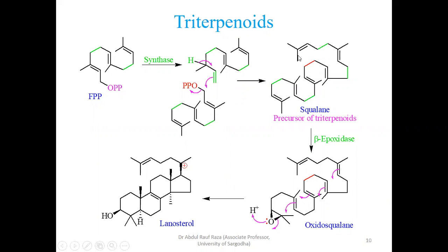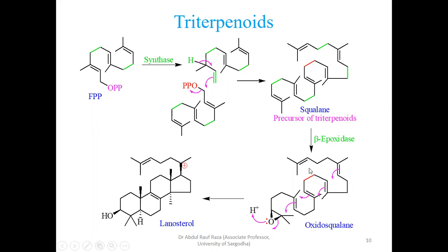Squalene undergoes the action of epoxidase — epoxidation takes place at one terminal. This is a symmetrical molecule; whether you start from one end or the other, you shall see the same number of isoprene units: one, two, three, four, five, six — three on the right-hand side, three on the left-hand side.